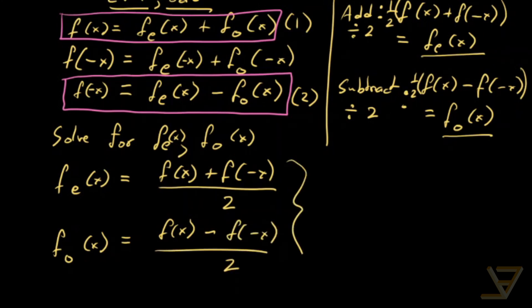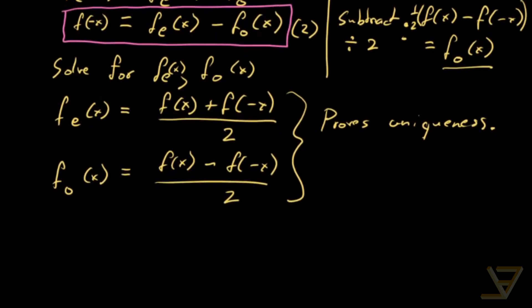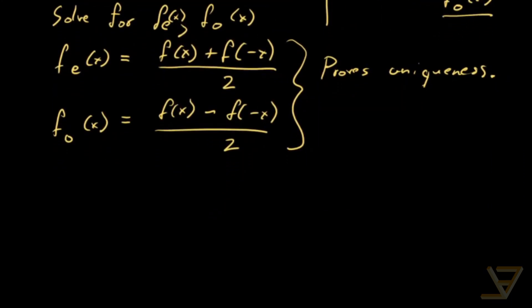So this over here proves uniqueness because we just showed that the even function f_e and the odd function f_o they can only be one function each in terms of f.